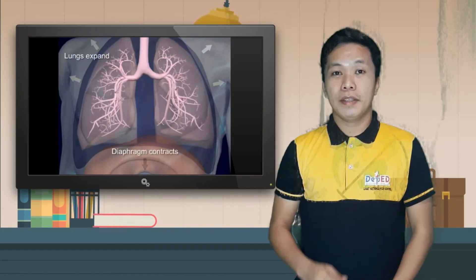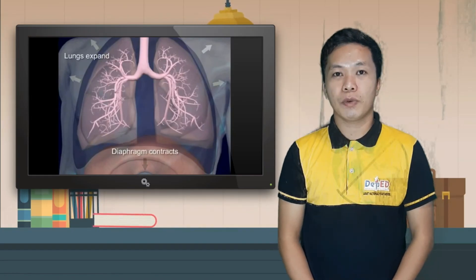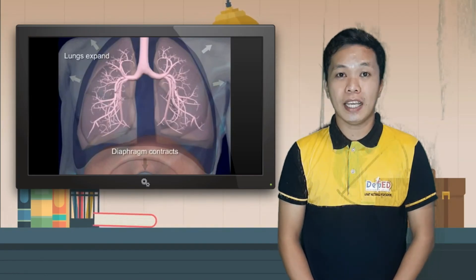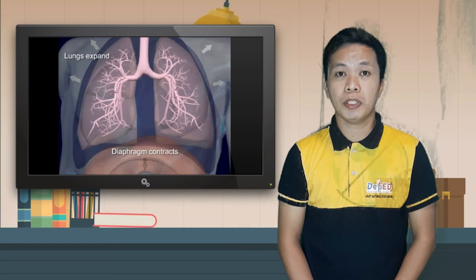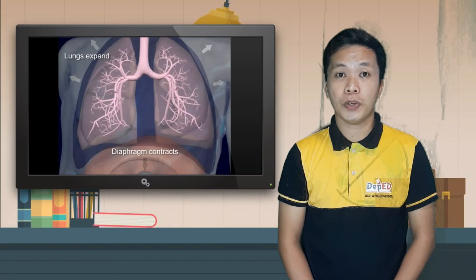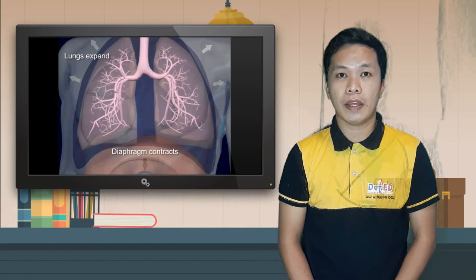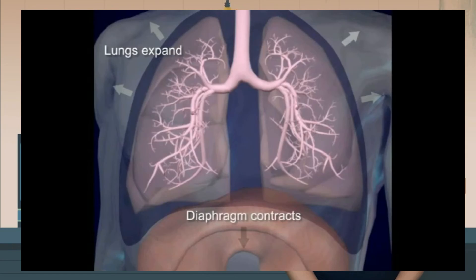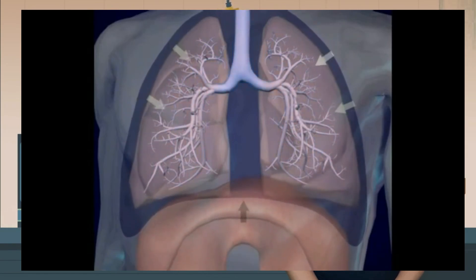The lungs are an important organ of the body. They play a vital role in the respiratory system. As the lungs expand, there is a momentary reduction in the pressure. Thus, the pressure inside the body is lower than the outside, and the surrounding air seeps in the body. This process is called inhalation.